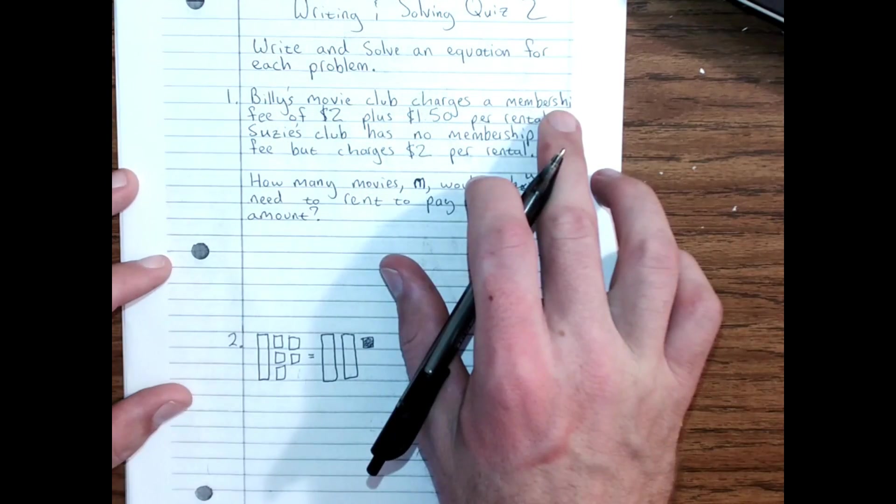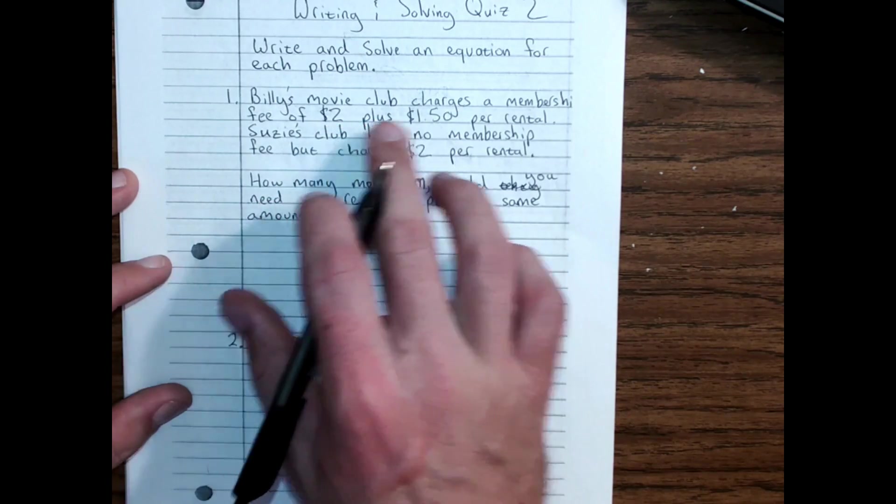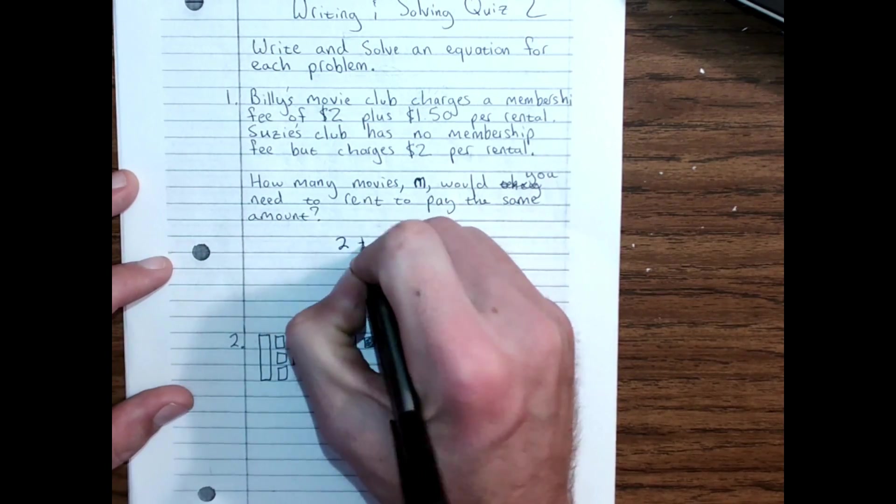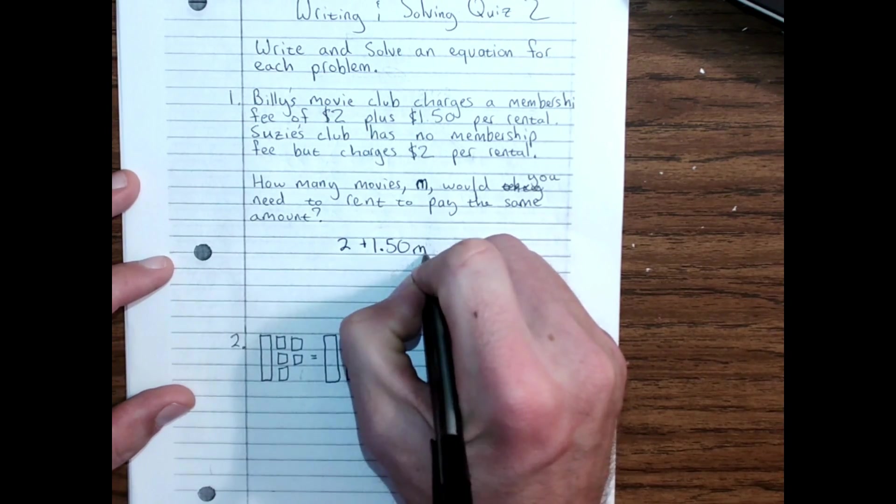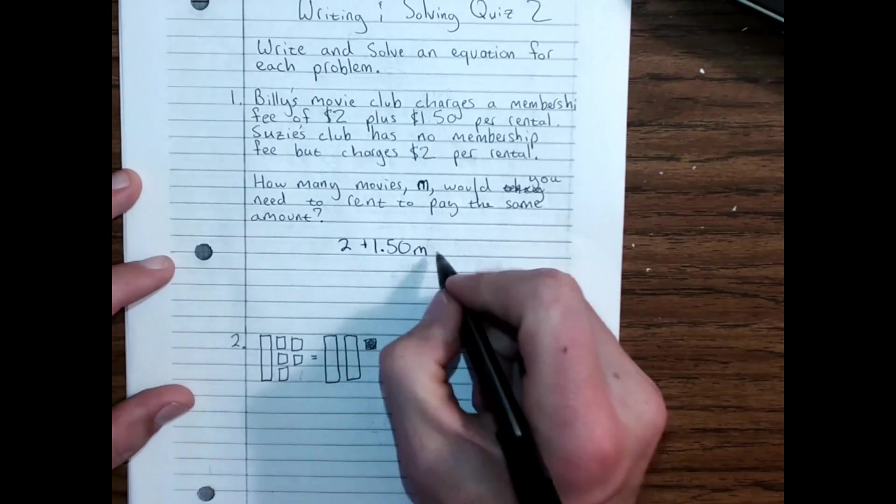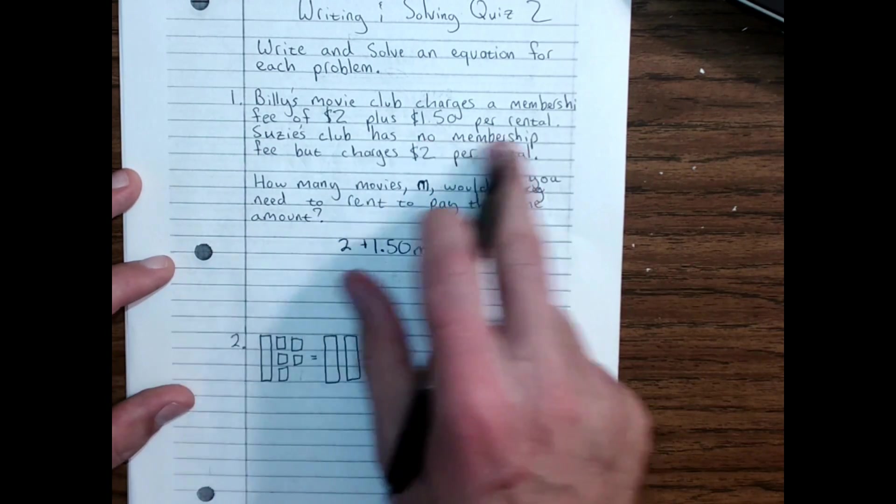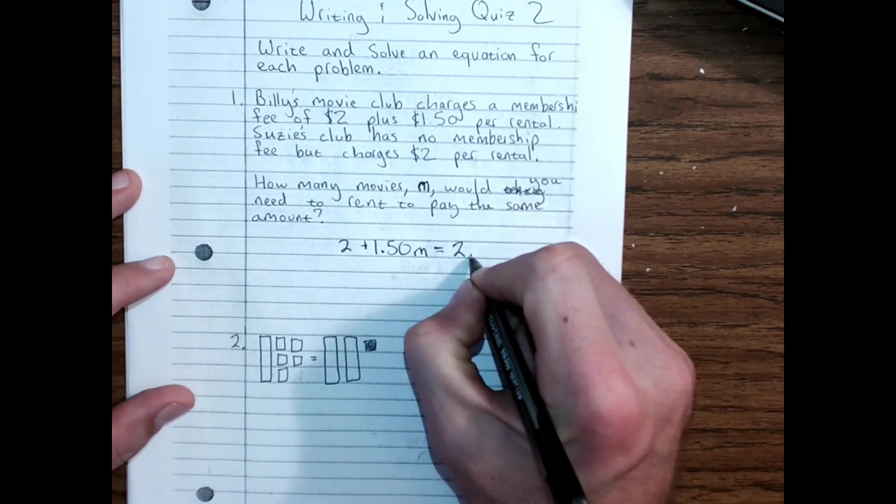Here is the quiz from today. Today, we've got a movie club that charges a membership fee of $2 plus $1.50 per rental. So $2 plus $1.50 per rental or per movie, so we used M.